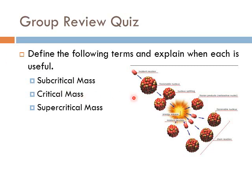Critical mass means for every time you split an atom, you get exactly one more atom splitting, so the reaction never dies off but never gets out of control either. We use critical mass in reactors. Supercritical mass is used in bombs — for every split, you get more than one reaction, so the energy release grows bigger and bigger, and it goes boom.